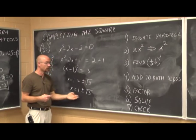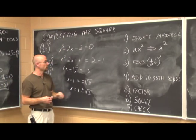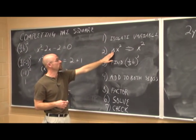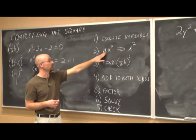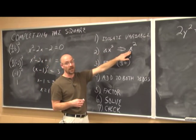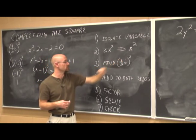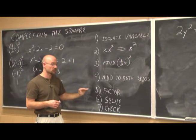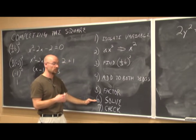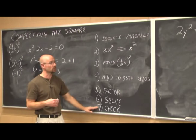This solution does work. To review completing the square: isolate the variable, ensure the x squared coefficient is 1, find half of b squared, add it to both sides, factor the perfect square, solve using the square root method, and always check your work.